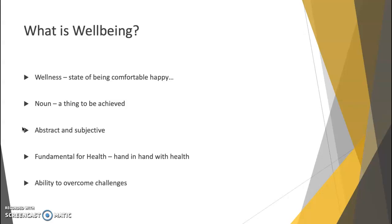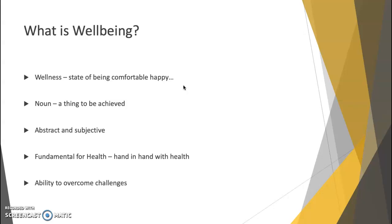Things that are abstract tend to be difficult to achieve because they are also subjective. What happiness looks like for me could be completely different to what it looks like for you — the same with well-being. I might define well-being as being physically fit and emotionally well, while you might define it as being strong and having enough money to do all the things you want to do.